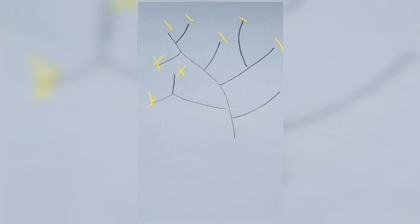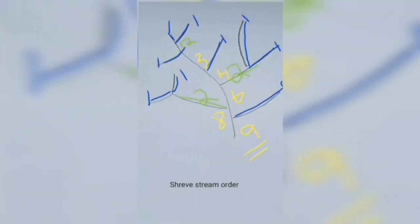So you count: 1, 2, 3, 4, 5, 6, 7, 8, 9. So it's 9 — and you'll see that is the same as the previous method. That is how you work out the stream order according to the Shreve stream order method.